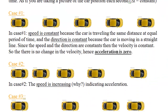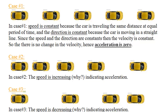Now let's look at examples of how to identify acceleration. Suppose you take a photo of a car every second — a top view — where each picture was taken one second after the previous one. In Case 1, the distance between each image and the next is the same. Since the time is constant and the distance is constant, the speed is constant. The direction is also constant — the car is moving in a straight line — so the velocity is constant and there is no acceleration.